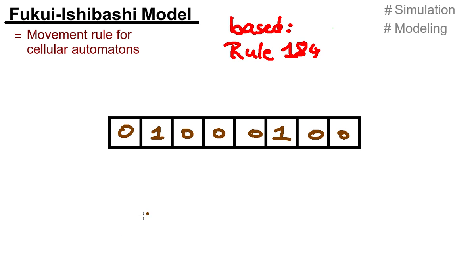And let's review a little bit rule 184, that said that we can at max move one field forward, one cell forward, in case that cell is empty.